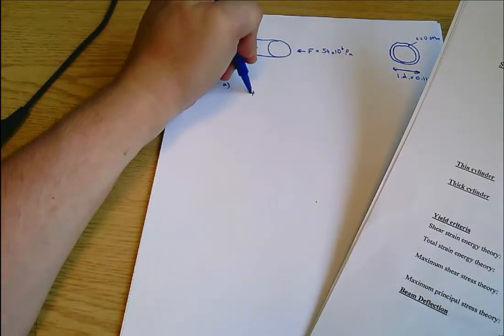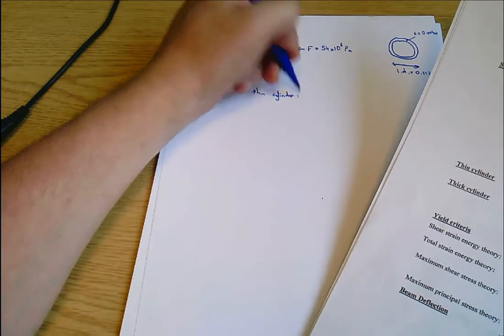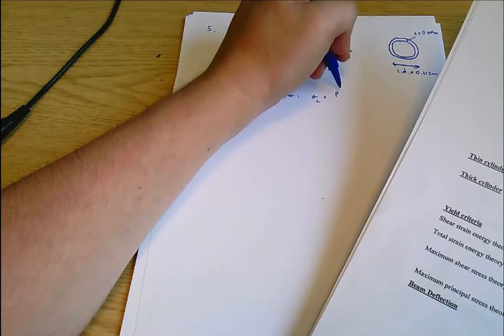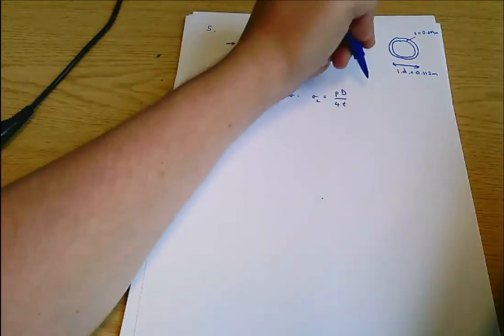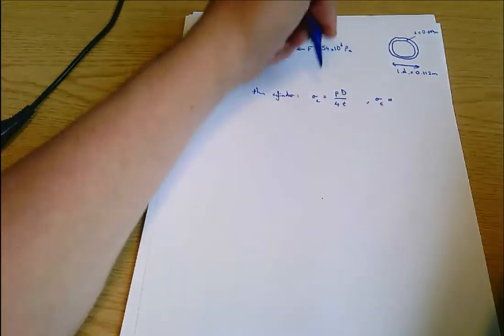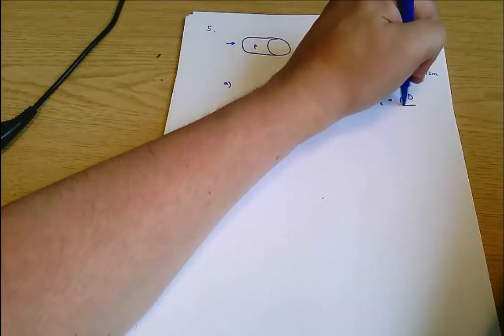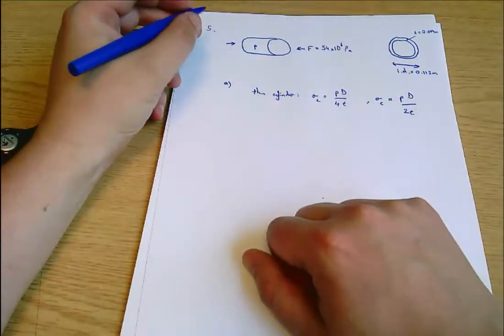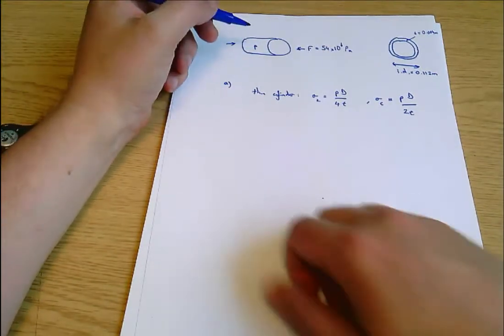Here we go, thin cylinder. Let's write this out. Sigma sub L equals PD over 4T, and sigma sub C, so that's the longitudinal stress due to the pressure. This is circumferential stress due to the pressure, which is PD over 2T. We know D and T and P.